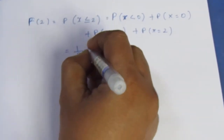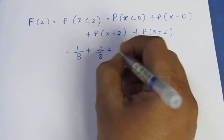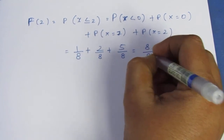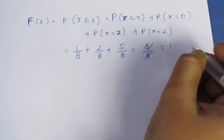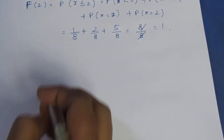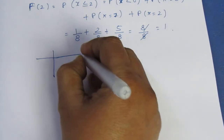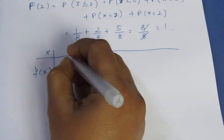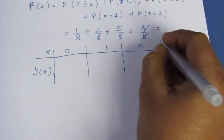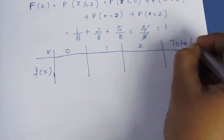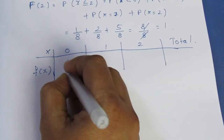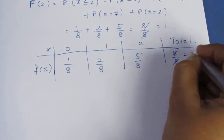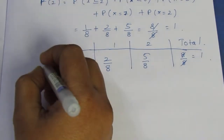For the cumulative distribution: F(1) = P(x ≤ 1) = 1/8 + 2/8 = 3/8. F(2) = P(x ≤ 2) = 1/8 + 2/8 + 5/8 = 8/8 = 1. The probability distribution values are 1/8, 2/8, 5/8, with a total of 8/8.